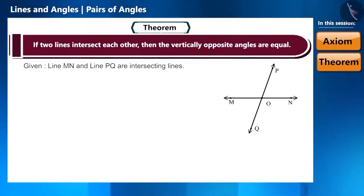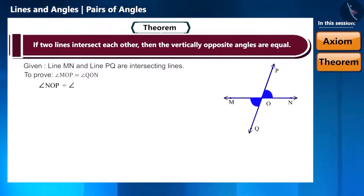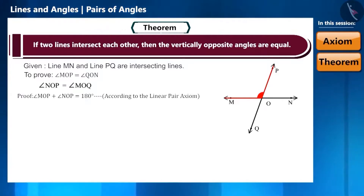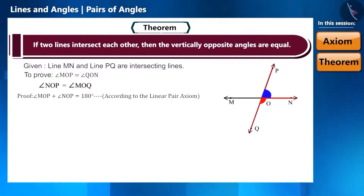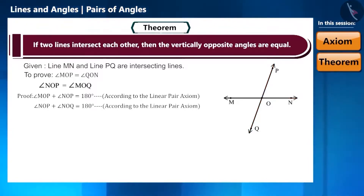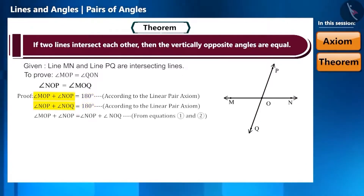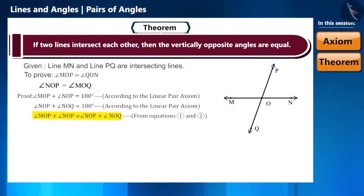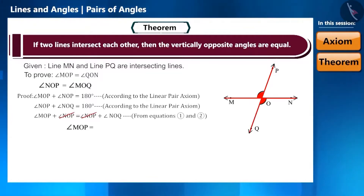Keeping ray OP in mind: angle MOP plus angle NOP equals 180 degrees by the linear pair axiom. Taking ON as the ray: angle NOP plus angle NOQ equals 180 degrees by the linear pair axiom. Since both right-hand sides are equal, the left-hand sides are equal too: angle MOP plus angle NOP equals angle NOP plus angle NOQ. Cancelling angle NOP from both sides gives angle MOP equals angle NOQ.